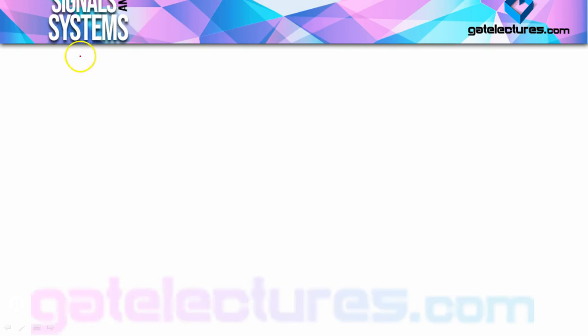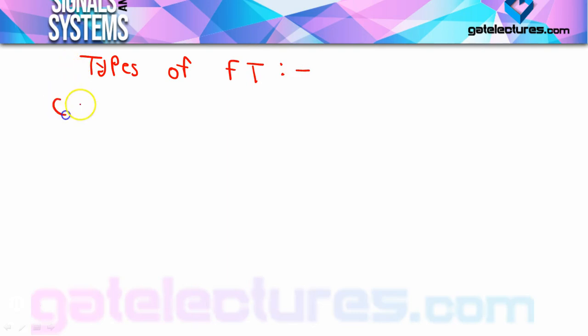Now in this video I will start with the types of Fourier transform. So basically here we will start with types of Fourier transform — there are three types. The first is the well-defined Fourier transform.